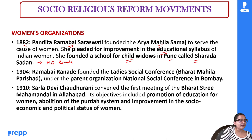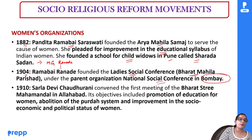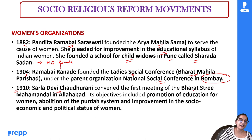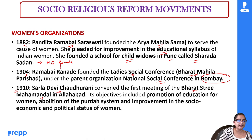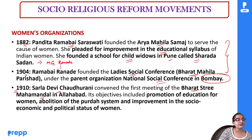Besides Pandita Ramabai, Ramabai Ranade — wife of M.G. Ranade — started the Ladies Social Conference and Bharat Mahila Parishad in 1904, which was the women's wing of the National Social Conference in Bombay. In 1910, Sarla Devi Chaudhrani founded Bharat Stree Mahamandal in Allahabad, considered the first independent organization started by a woman that demanded not only social but also political rights for women.